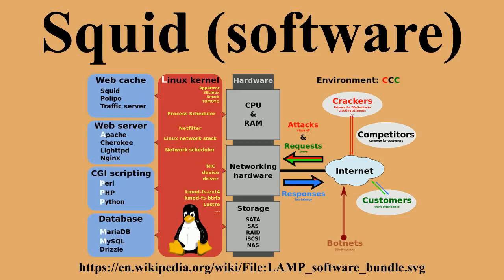Squid was originally developed as the Harvest Object Cache, part of the Harvest Project at the University of Colorado Boulder. Further work on the program was completed at the University of California, San Diego, and funded via two grants from the National Science Foundation. Dwayne Wessels forked the last pre-commercial version of Harvest and renamed it Squid to avoid confusion with the commercial fork called Cached 2.0, which became NetCache. Squid version 1.0.0 was released in July 1996.